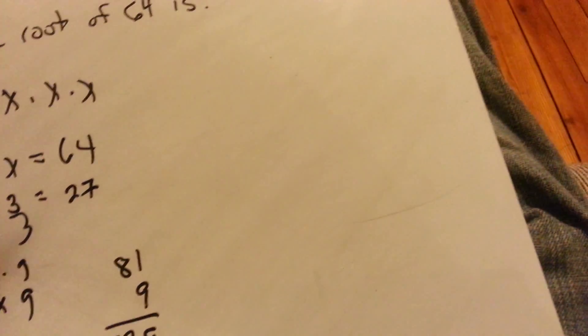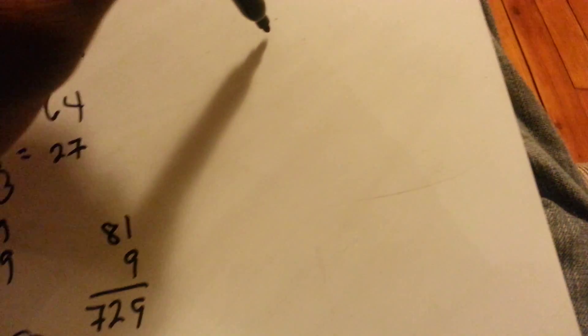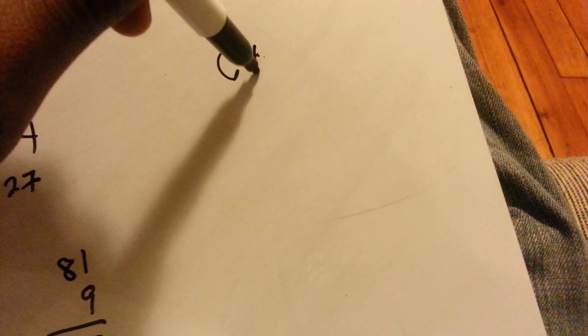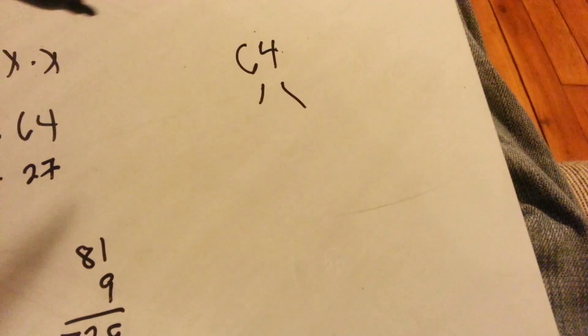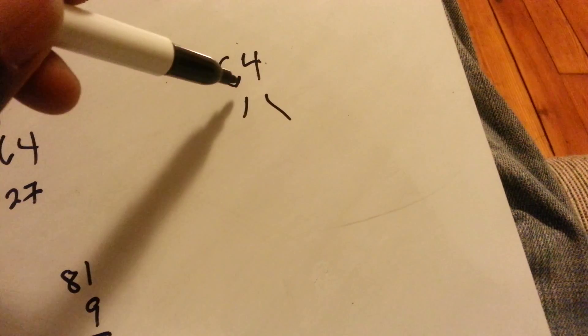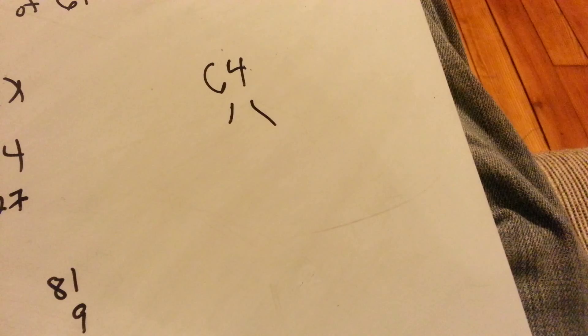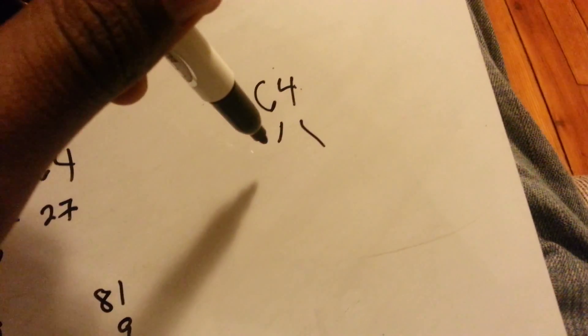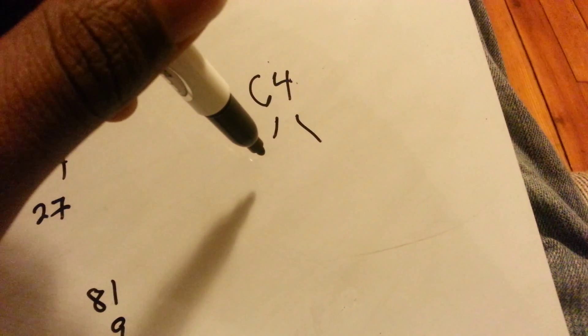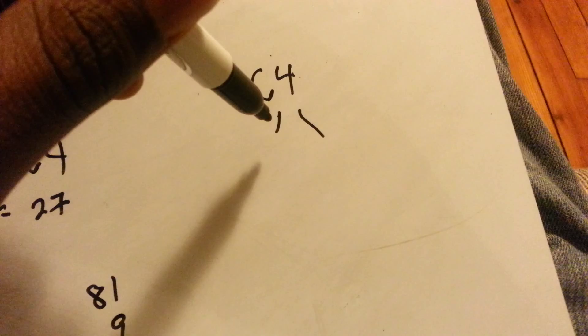And the last way is the factor tree. You take the number and you basically try and break it down to the simplest forms. So we do 64 divided by two, which is 32.